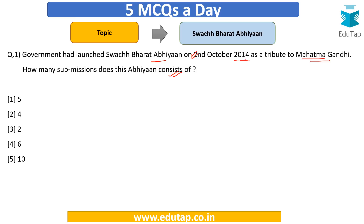Your answer options are: five, four, two, six, or ten. Try and solve it — if you have read about it, you should know the answer. The correct answer is option three — that is, two sub-missions.